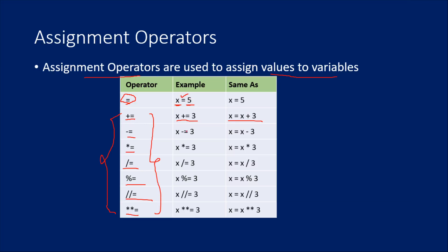I have listed everything here. The same thing you can do with the subtraction operator, multiplication operator, division, modulo — with any operator in Python, you can use this assignment operator to do that operation and then assign the value back. In this case we are adding and assigning back, subtracting and assigning back. I have used a column called 'same as' to give you a clear idea of what each expression will do.